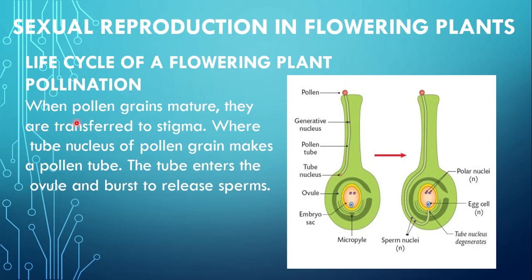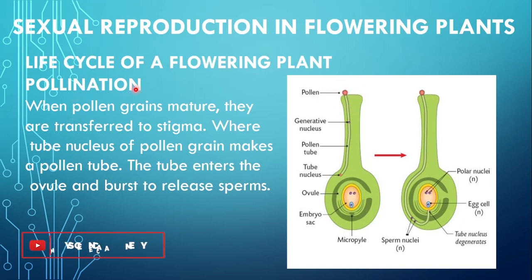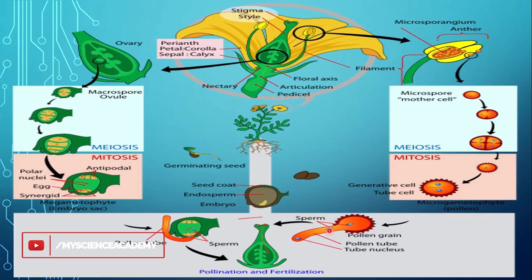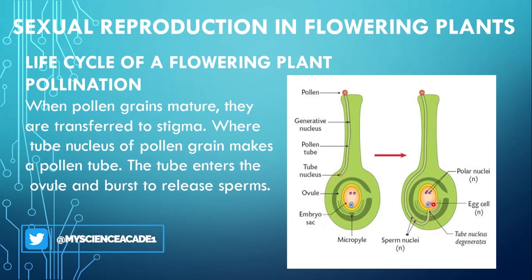Next step is pollination. When pollen grains mature, they are transferred to the stigma, where the tube nucleus of the pollen grain makes a pollen tube. The tube enters the ovule and bursts to release the sperms. Mature pollen grains ke stigma par transfer hone ke process ko pollination bola jata hai. Is pollen grain mein maujood tube nucleus ek tube ko form karta hai, jiska main function sperm ko egg tak le jaana hota hai. Finally pollen tube ovule mein enter ho jati hai aur burst ho jati hai aur apne andar se sperms ko release kar deti hai.